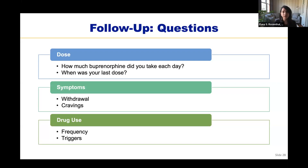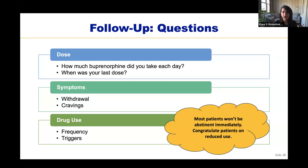I generally prescribe a seven-day prescription of 16 mg per day and follow up after a week. At follow-up visits, I ask about their dose, when their last dose was, any persistent withdrawal symptoms, any cravings, and about drug use frequency and triggers. For drug use questions, I assume there is ongoing use — rather than 'you didn't use heroin this week, did you?' I say 'how many times did you use?' Most patients won't be abstinent immediately, but most will have reduced their use frequency. I like to congratulate patients on reduced use rather than focus on failure to achieve abstinence.